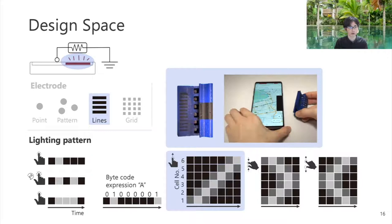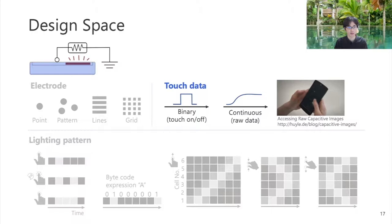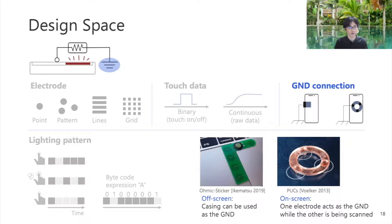In addition to the binary touch input, the low capacitive data can be used for detecting a continuous change in the resistance value of LDRs. Lastly, there are two options for connecting the ground to simulate touch inputs without using fingers.